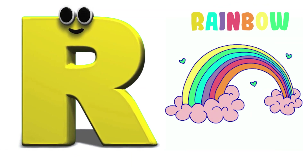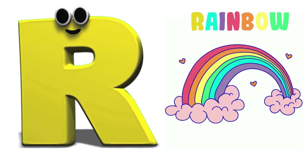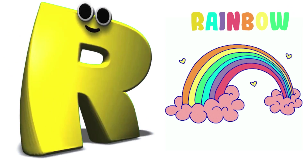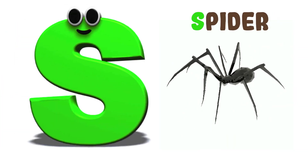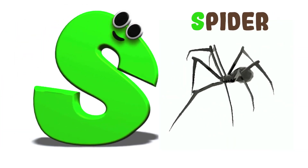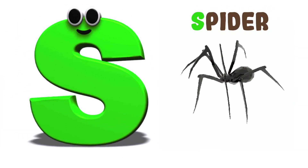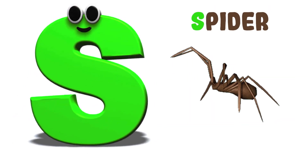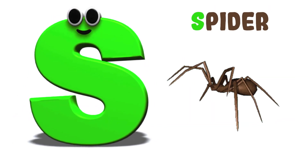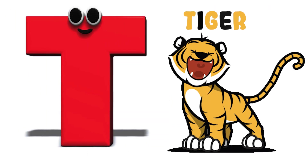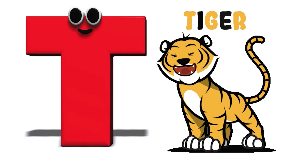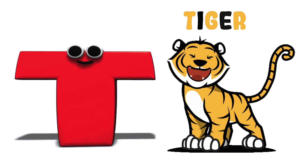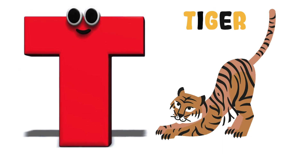R is for Rainbow. R-R-Rainbow, R-R-Rainbow. S is for Spider. S-Spider, S-Spider, S-Spider. T is for Tiger. T-T-Tiger, T-T-Tiger, T-Tiger.